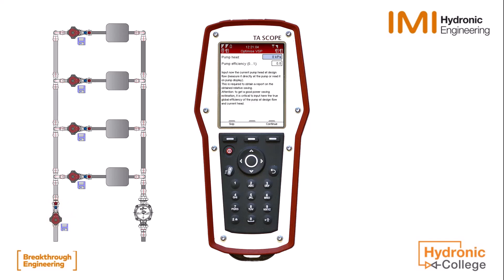You must now enter the current operational conditions of the pump. Pump head can be read on the pump screen or measured across the pump directly. Efficiency will need to be taken from the pump's data curve. These figures are required to enable TA Scope to give an estimation of energy savings from the VSP optimization process. Once you have entered the data, press Continue.